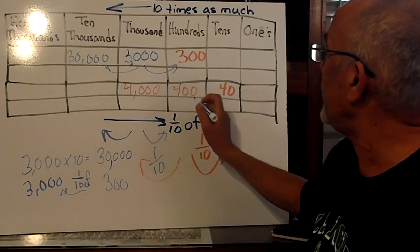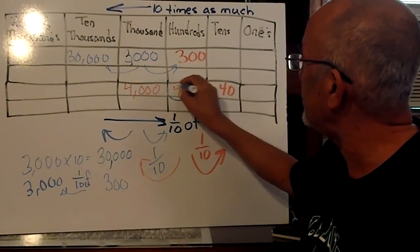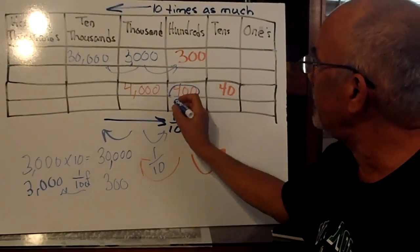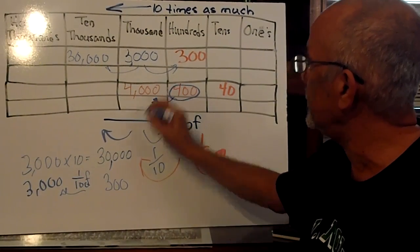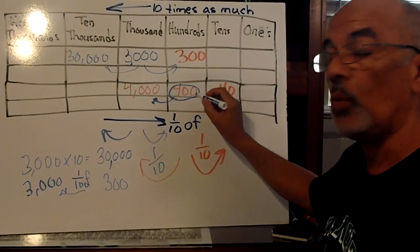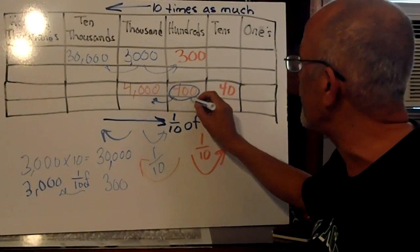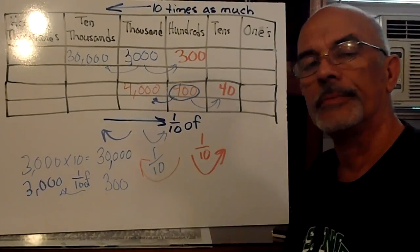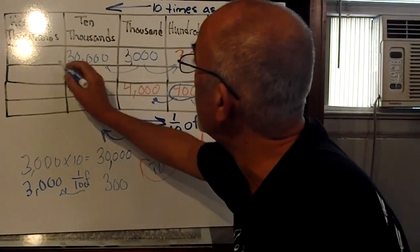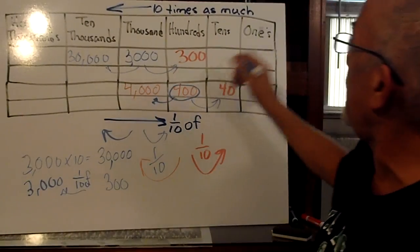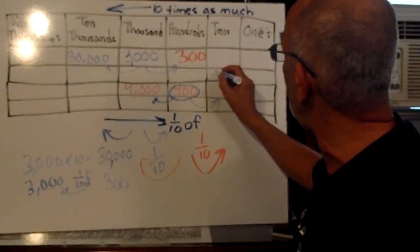Let's look at 400. 400 times 10, we move over 1, it's 4,000. If you wonder what 1 tenth of 400 is, we move backwards. Let's try one more number. Let's say 50.